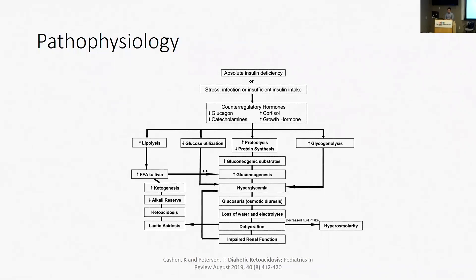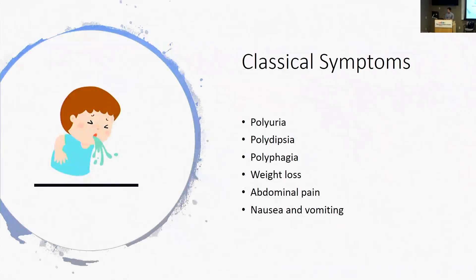Classic presenting symptoms of DKA include polyuria, polydipsia as a compensatory mechanism for dehydration, and polyphagia which tends to happen earlier in the process. Once tipped into DKA with release of counter-regulatory hormones, you start to see more abdominal pain and nausea. Kids coming in with DKA have passed that polyphagia phase, but you may get a history of eating a lot for weeks or months while losing weight, and now not wanting to eat with vomiting and abdominal pain.